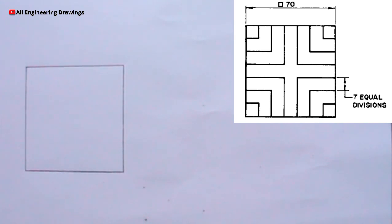We can just divide the left side and the bottom of the square into 7 equal parts.